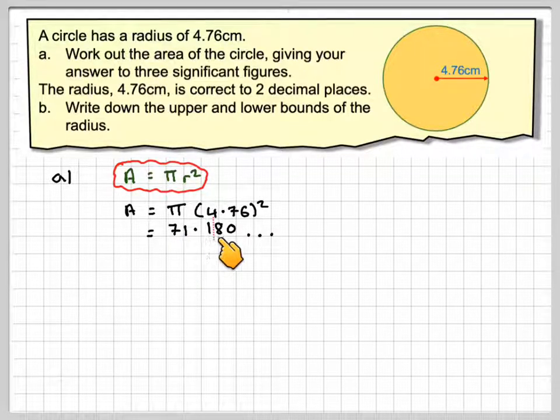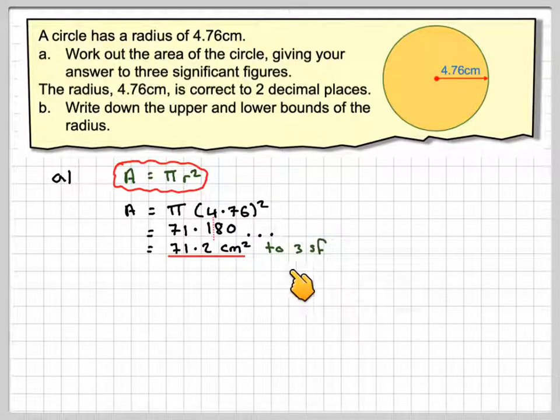we're going to get 71.180, and we need to round that off to three significant figures, so first, second, third, so that 8 will make that 1 a 2. So the answer will be 71.2 centimeters squared to three significant figures.